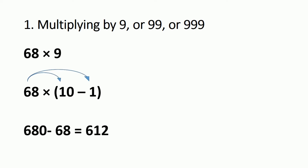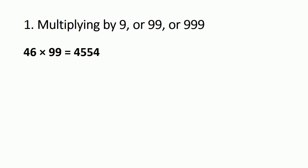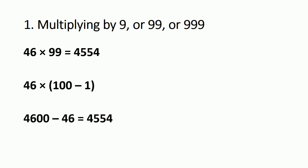To multiply by 99, you multiply by 100 minus 1. Previously we used 10 minus 1 equals 9; here we use 100 minus 1 equals 99. Multiplication by 100 is easy — just write two zeros at the end. For example, 46 multiplied by 99: the answer is 4554. Using this trick, write 100 minus 1 instead of 99. So 4600 minus 46, which you can do in your mind, gives 4554.